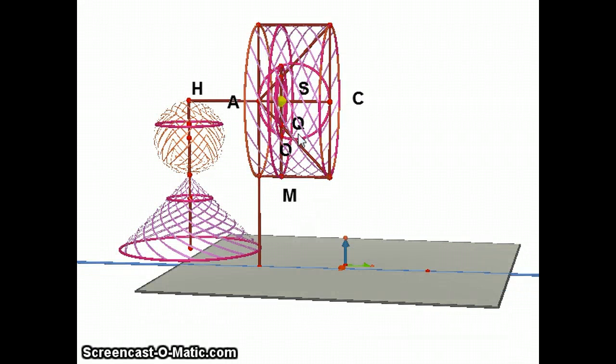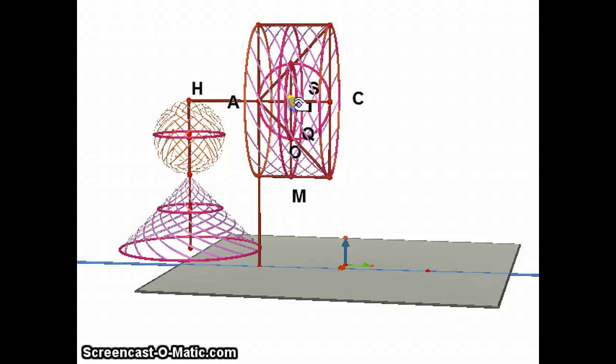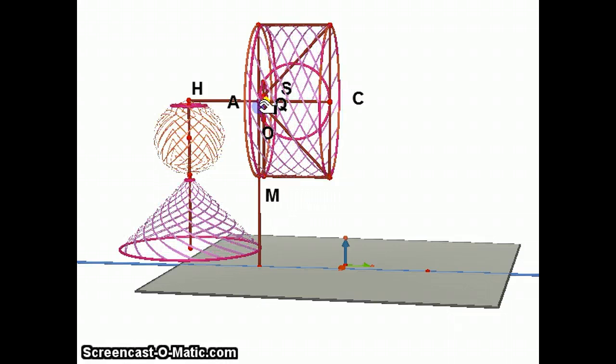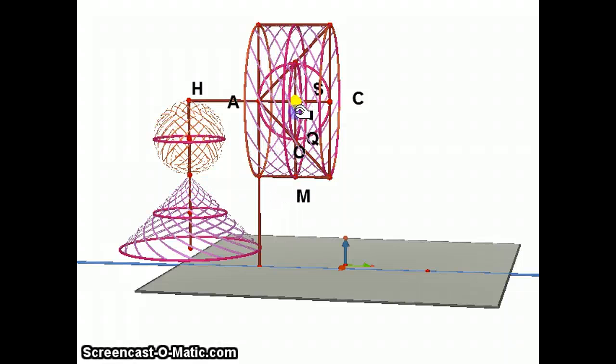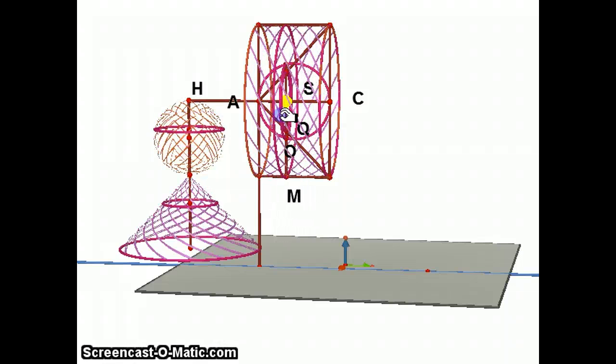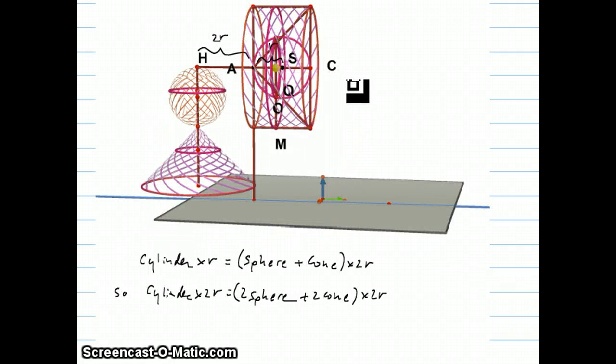But all of those circles with radius SM together make up a cylinder. And those smaller circles, when they get put together, reconstruct a sphere and a cone. So when you put together all those circles, all these vertical circles here with SM as their radius, you get the big cylinder. Each circle balances out on the other side two circles, one that's part of the sphere, one that's part of the cylinder.